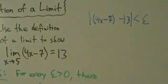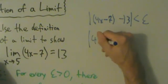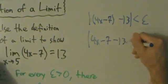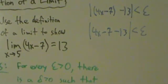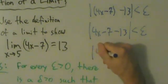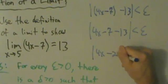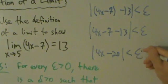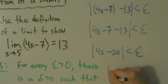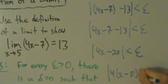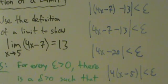We're going to start with: absolute value of 4x minus 7 minus 13 less than epsilon. Just like before, the first thing we can do is drop the parentheses, so we have absolute value of 4x minus 7 minus 13 less than epsilon. Now we can simplify: that gives us absolute value of 4x minus 20 less than epsilon. Now notice there's a common factor of 4 we can pull out, so that becomes absolute value of 4 times (x minus 5) less than epsilon.